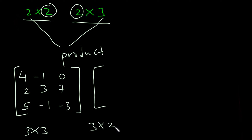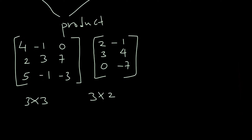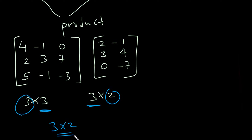Let's multiply it by a 3-by-2 matrix. So let's have: 2, negative 1, 3, 4, 4, 0, and negative 7. We can multiply these two matrices because the number of columns of the first matrix — that is 3 — is equal to the number of rows of the other matrix. So we can multiply, and the product we're going to get will be a 3-by-2 matrix.